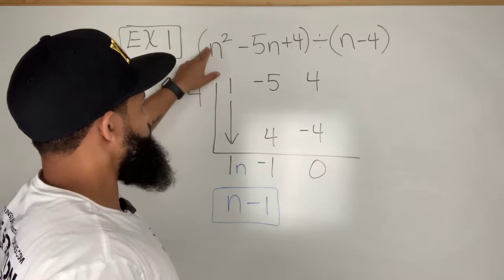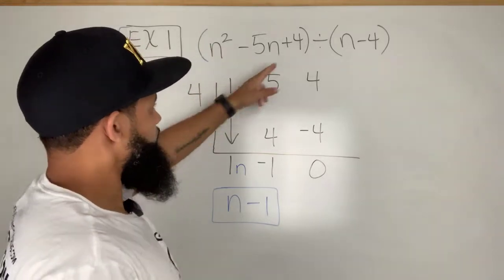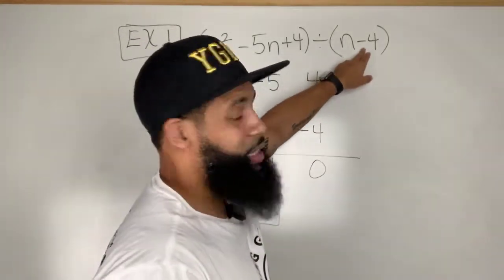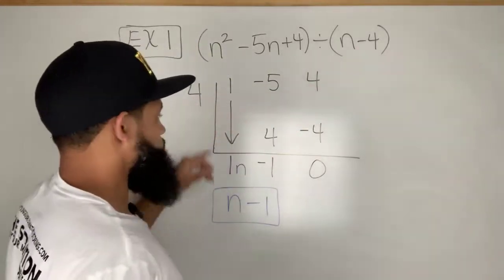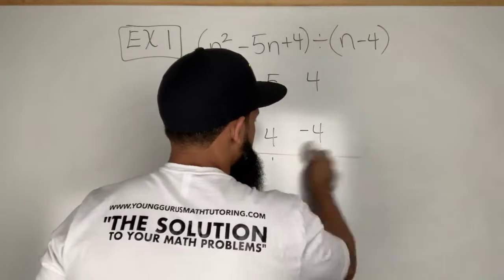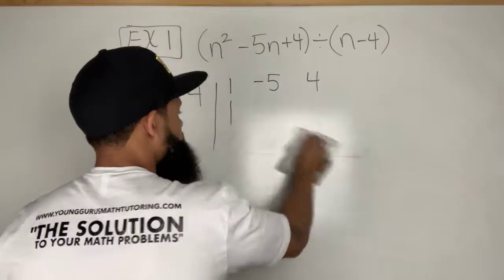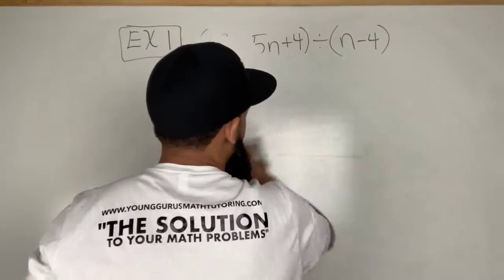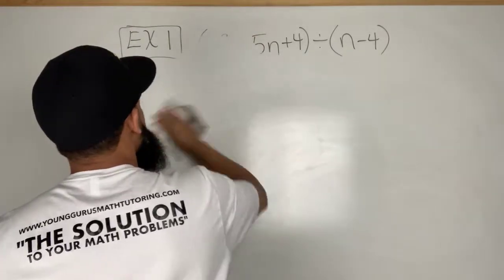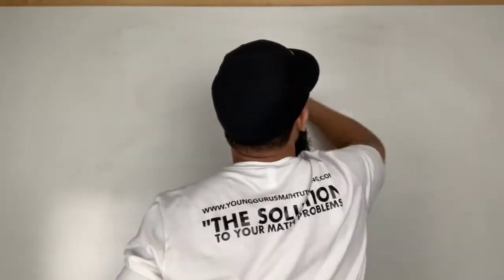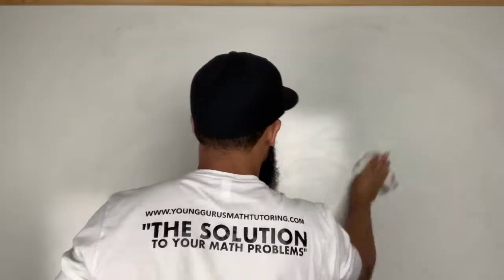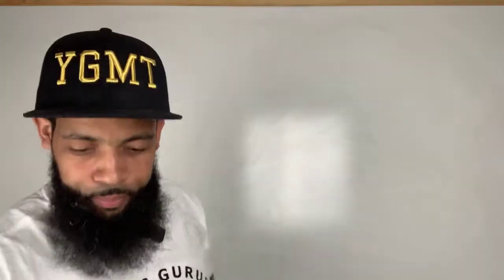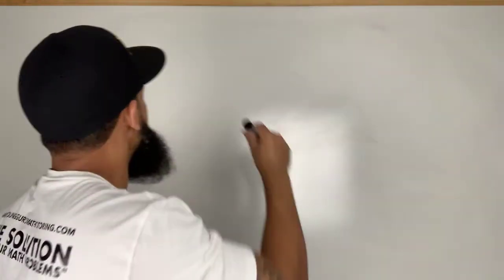You write your terms in descending order, but we're going to show you another example. Once again I take the coefficient of each term including the constant, I put those down here. Remember if there's one that's missing you have to put the zero in place. When it's a minus over here for my divisor I just take that number.